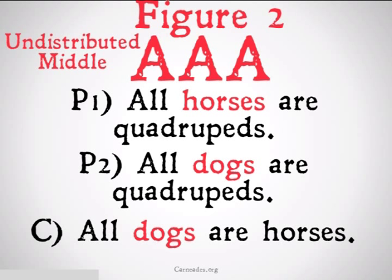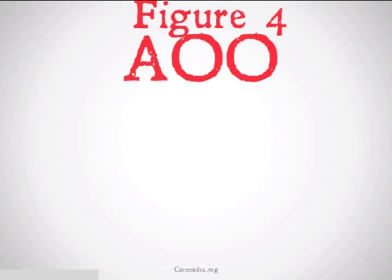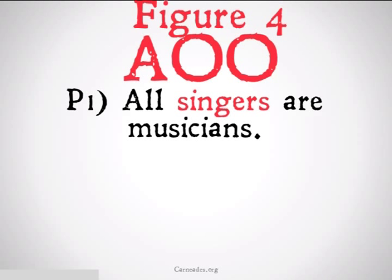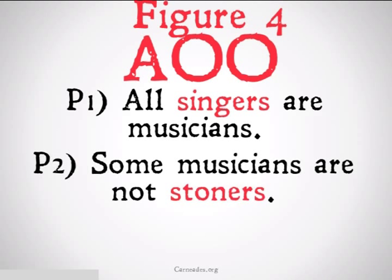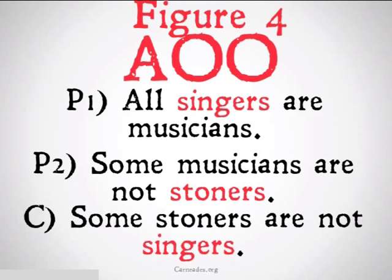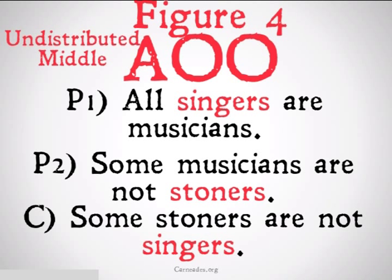Undistributed middle. Figure 4, AOO: all singers are musicians, some musicians are not stoners, therefore some stoners are not singers. Once again, we will notice that the middle term, musicians, does not get distributed, even though it seems that all the other terms do. Therefore, this is going to be another case of undistributed middle.